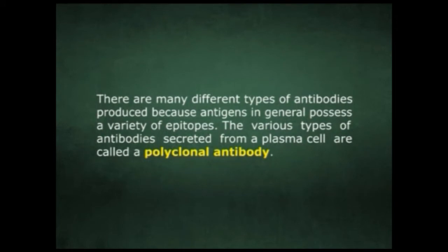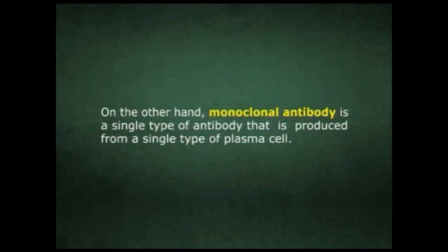There are many different types of antibodies produced because antigens in general possess a variety of epitopes. The various types of antibodies secreted from plasma cells are called a polyclonal antibody. On the other hand, a monoclonal antibody is a single type of antibody that is produced from a single type of plasma cell.